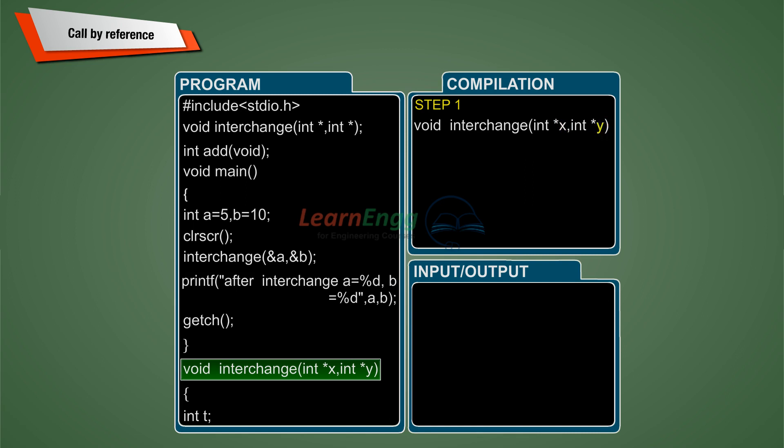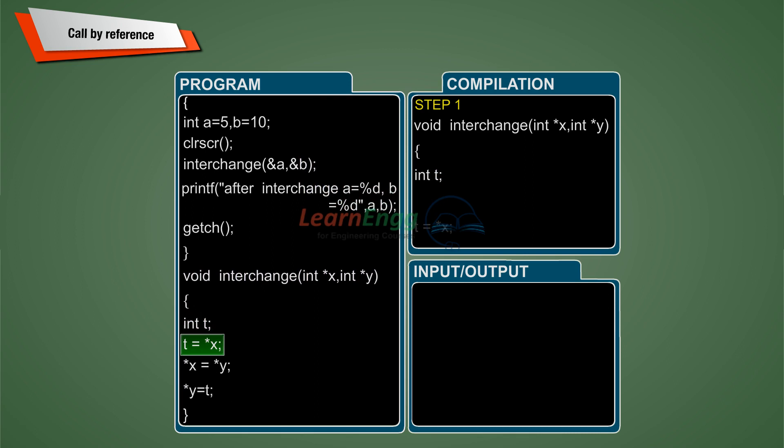Interchange definition contains two arguments declared with integer pointer x and y. The address reference which is passed from the caller function is stored in these two pointer variables x and y. Variable t is used for temporary storage to swap the values of x and y. Int t equals asterisk x statement assigns the value stored at location address specified in asterisk x into the variable temp.